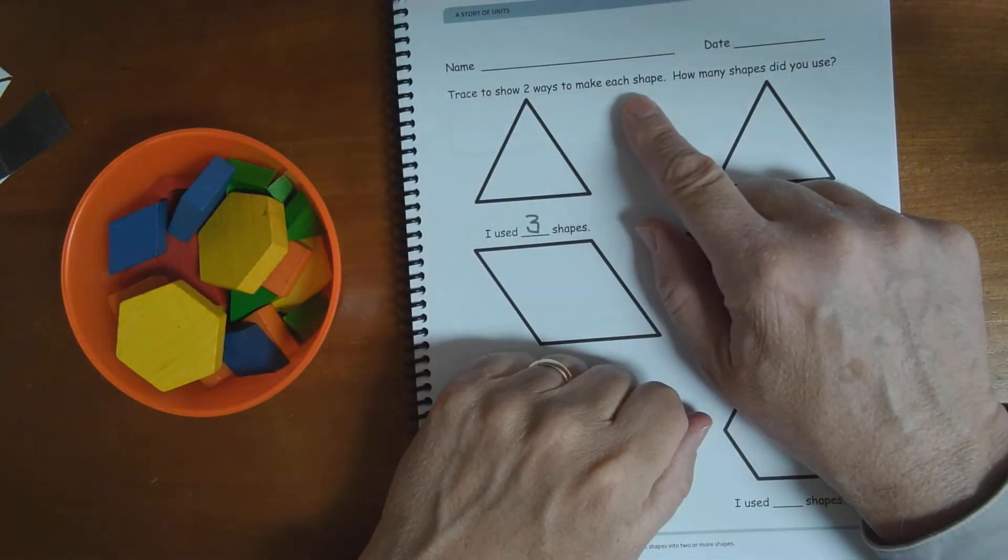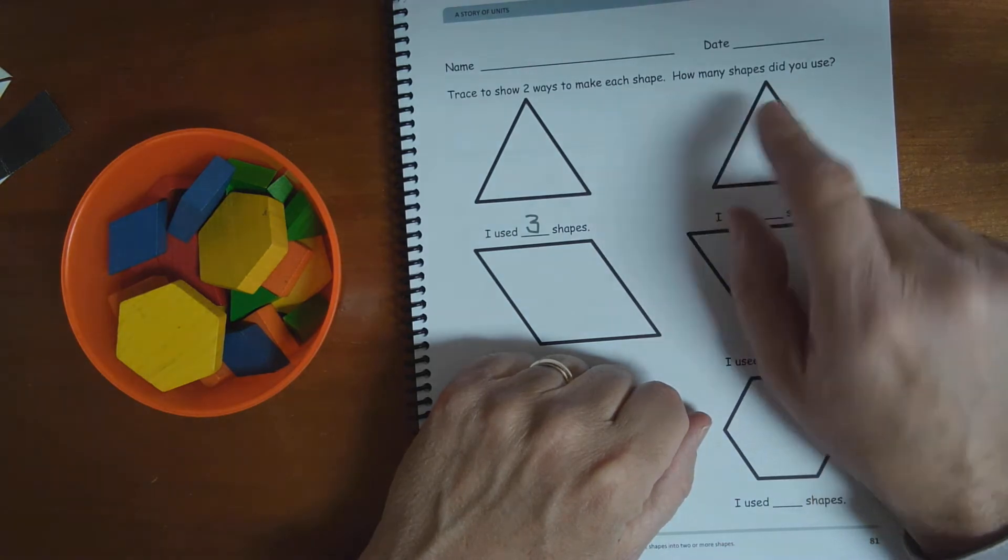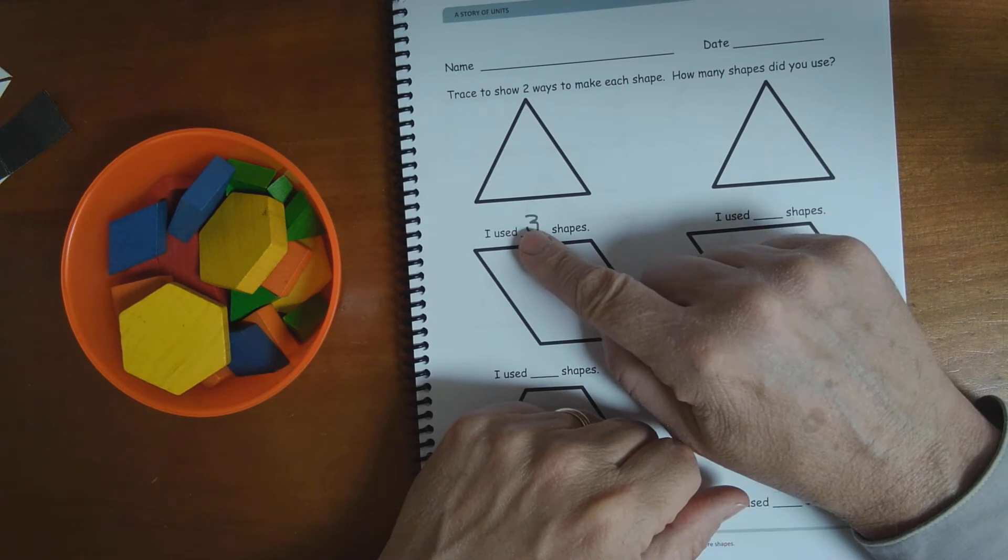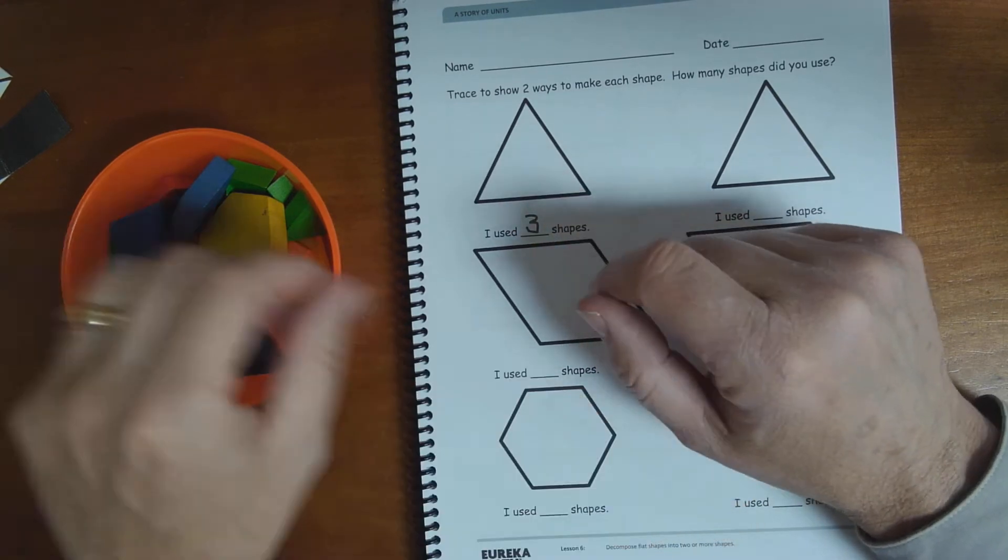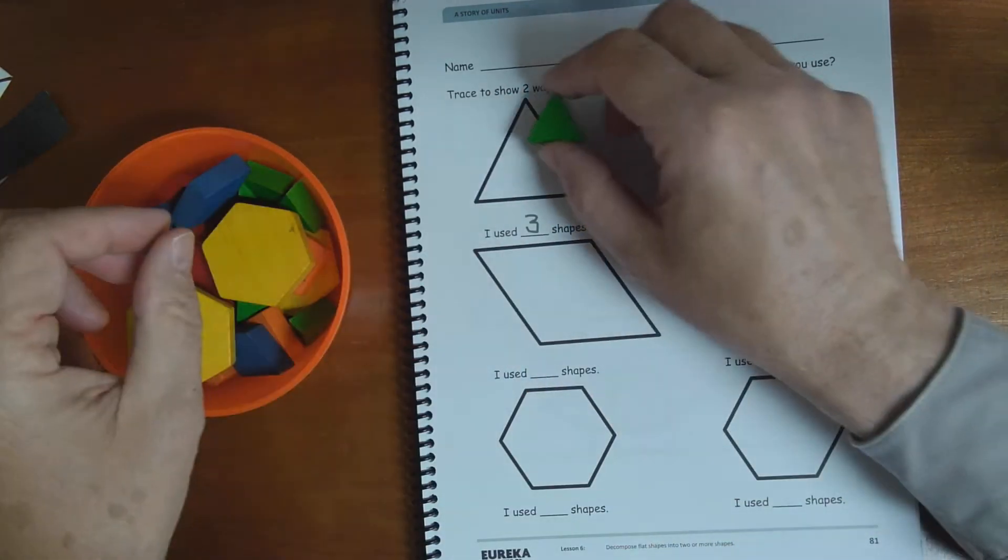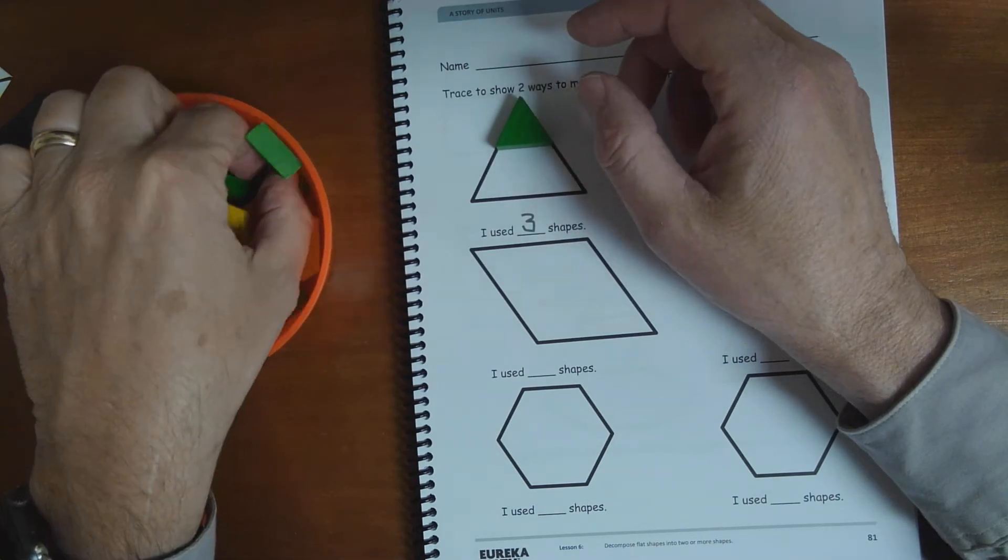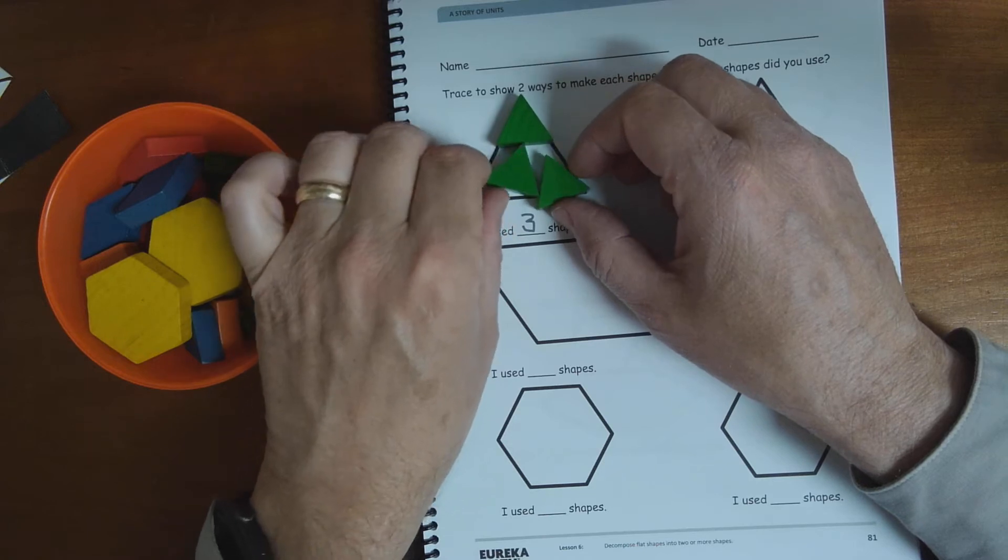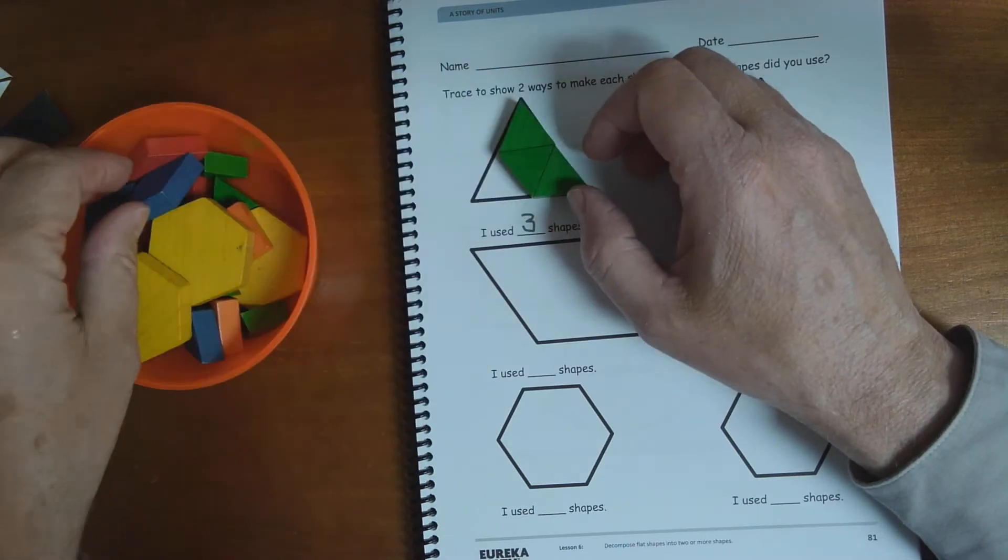How many shapes can we fit inside of this? It says trace two ways to show to make each shape. How many shapes did you use? Well, here's a triangle. They said they used three shapes to make this triangle. Well, let's take some triangles and see if we can cover up this big triangle.